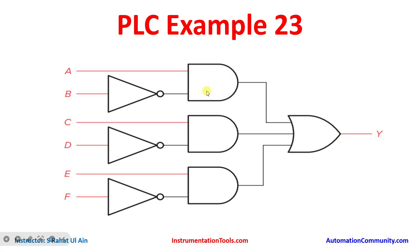Input A as a normally open contact and input B as a normally closed contact will be connected in series, thus implementing an AND logic gate. Similarly, C as a normally open contact and D as a normally closed contact will be connected in series, implementing an AND gate. E and F will also be connected in series. A-B, C-D, and E-F will be connected in parallel with each other.